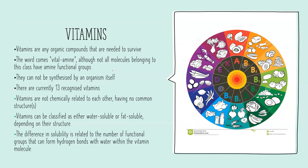Vitamins are classified as any organic compound that we require to survive. As mentioned, they are essential and not synthesized by the organism that uses them. There are around 13 vitamins, many of which appear in multivitamin supplements. Interestingly, even though we classify many things as vitamins, they are not chemically related to each other — they have no common structures, largely because they all have very different functions in the body.